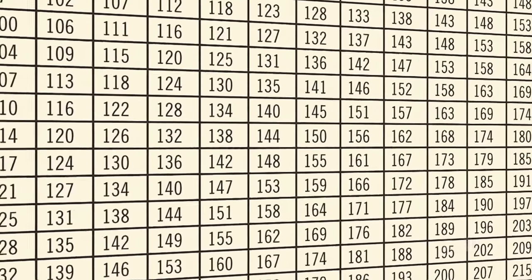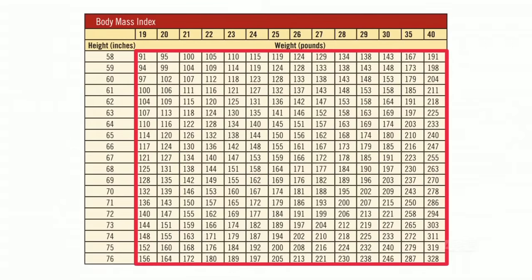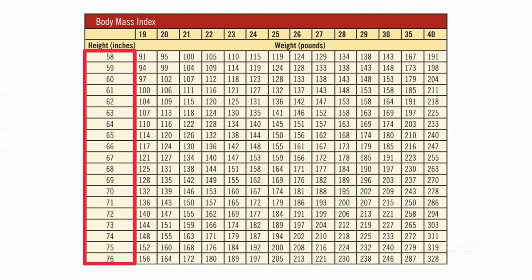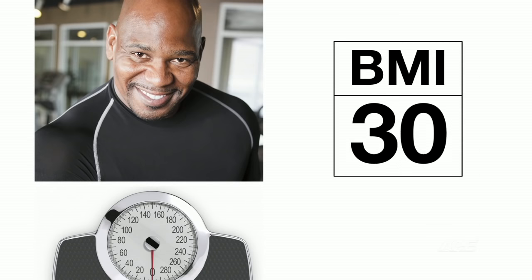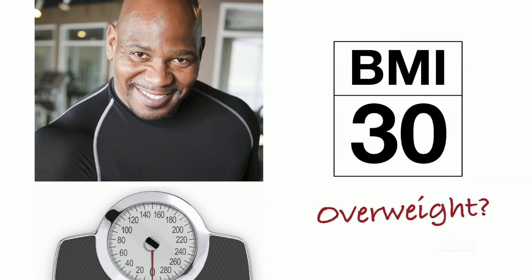The first measurement we're going to talk about is body mass index, also known as BMI. BMI describes the relationship between body weight and height, and since it cannot determine actual body composition, research has shown that this measurement can be somewhat limited in terms of its accuracy. For example, individuals who are extremely muscular would score high on a BMI chart, inaccurately categorizing those individuals as being overweight or obese.